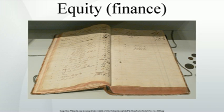Accounting. In financial accounting, owner's equity consists of the net assets of an entity. Net assets is the difference between the total assets of the entity and all its liabilities. Equity appears on the balance sheet, or statement of financial position, one of the four primary financial statements. The assets of an entity include both tangible and intangible items, such as brand names and reputation or goodwill. The types of accounts comprising owner's equity depend on the nature of the entity and may include share capital, common stock, preferred stock, capital surplus, retained earnings, bonds, treasury stock, stock options, and reserves.